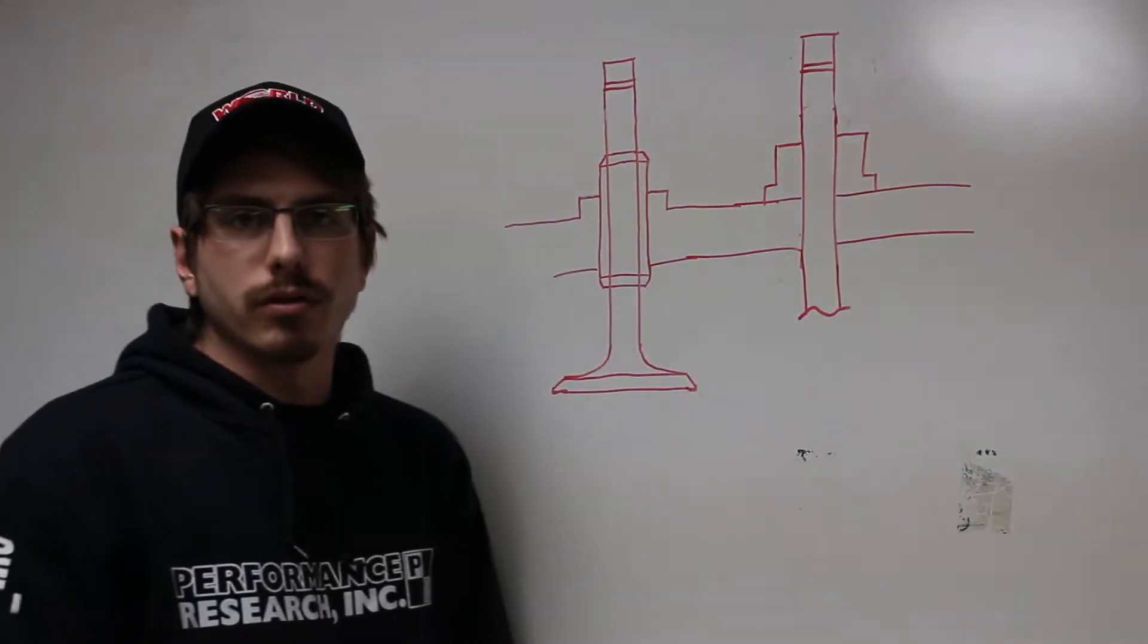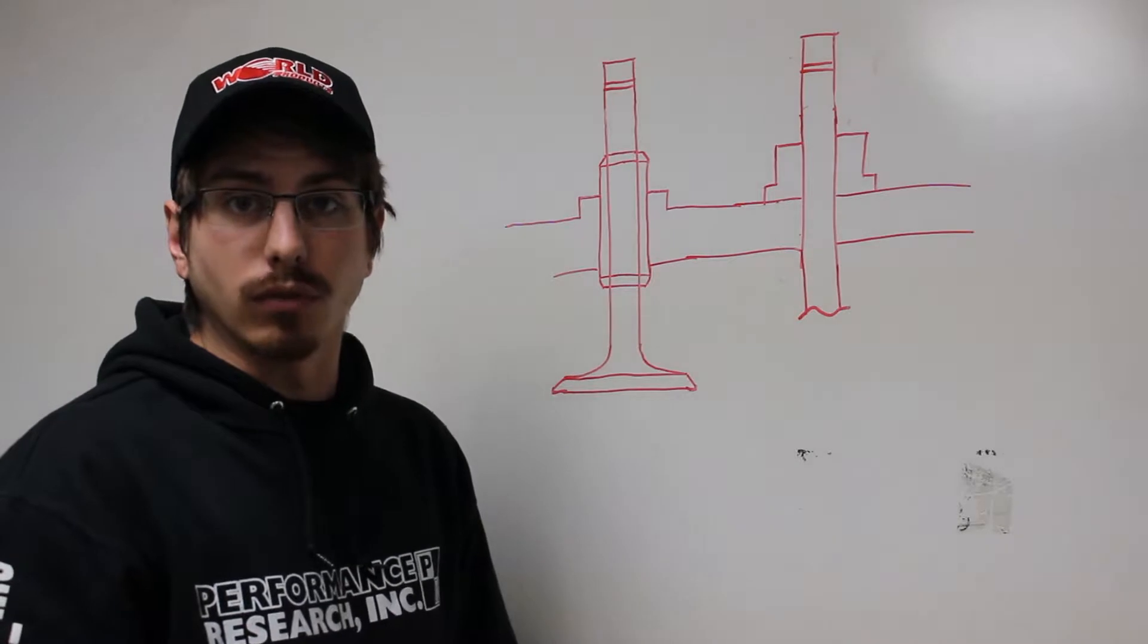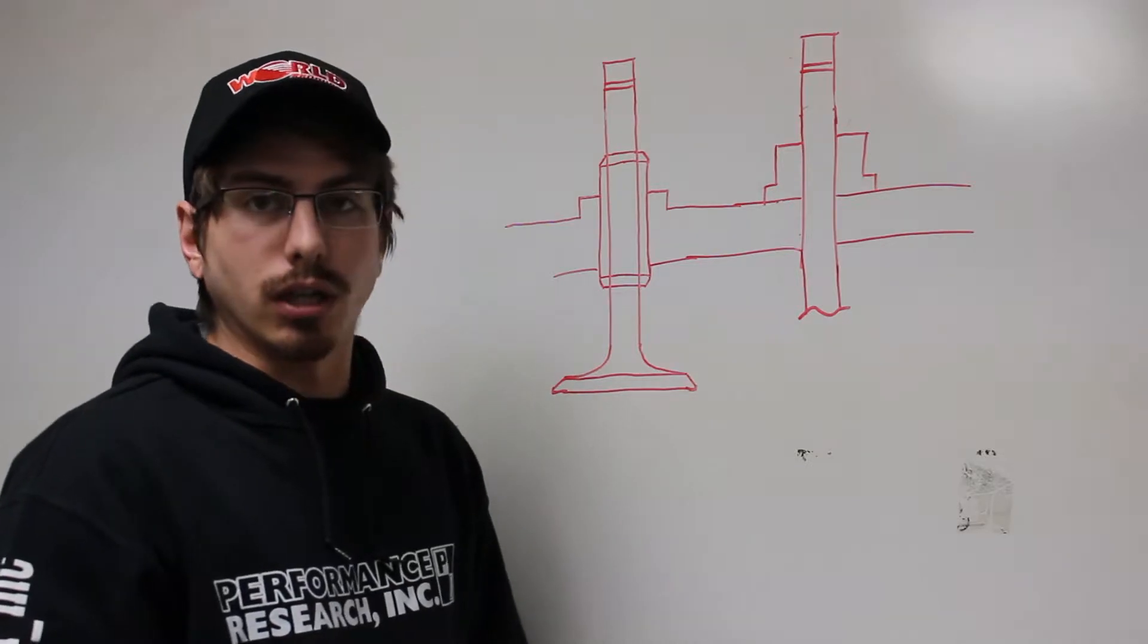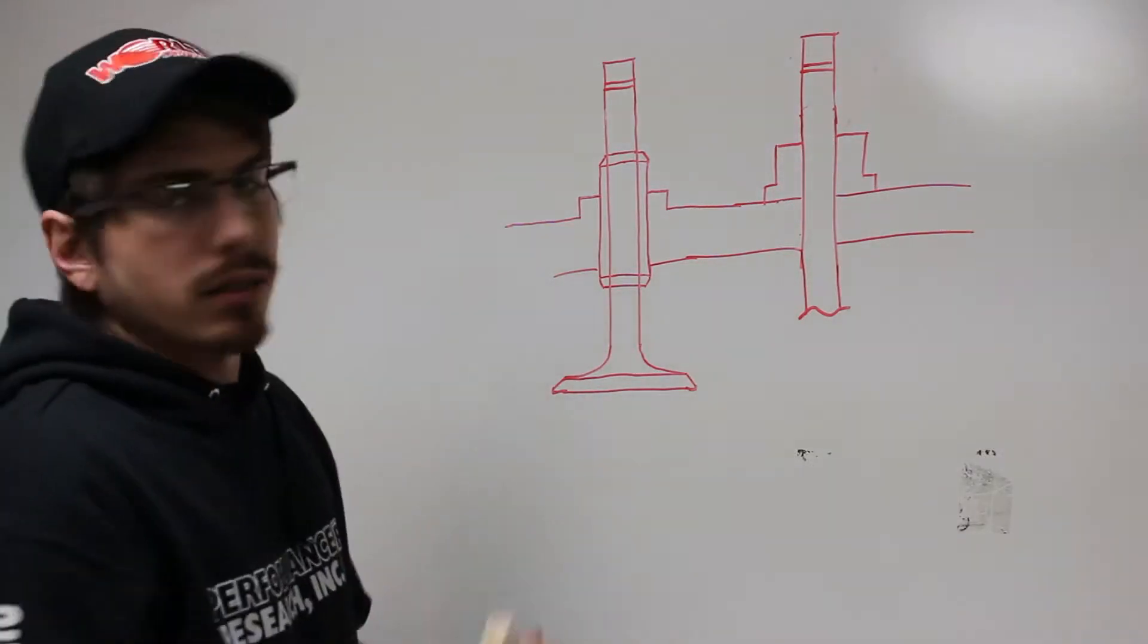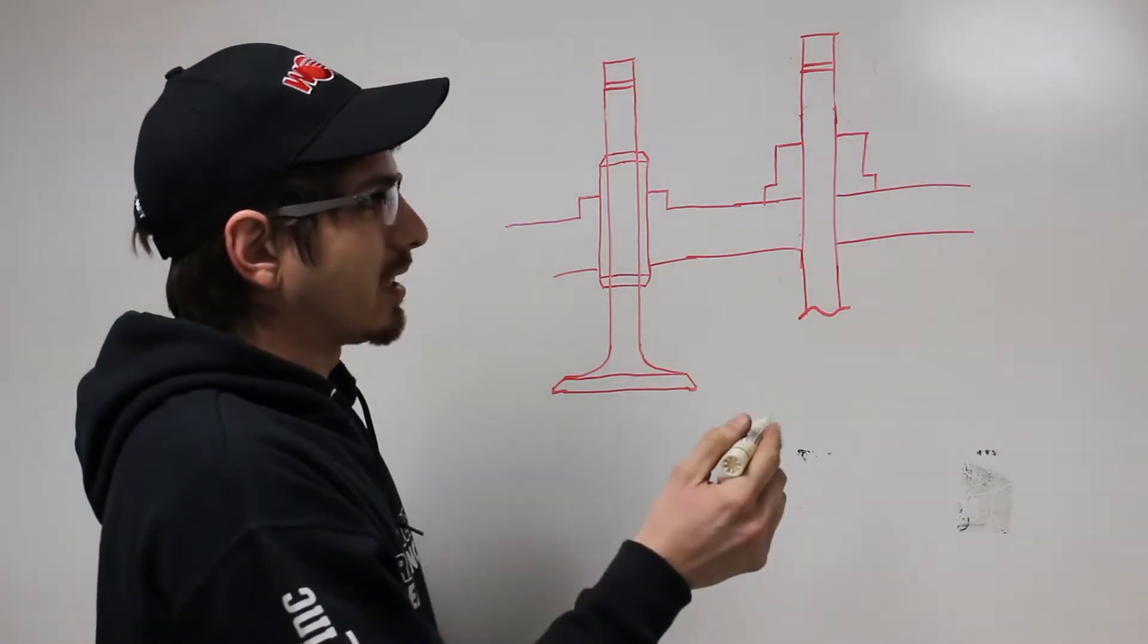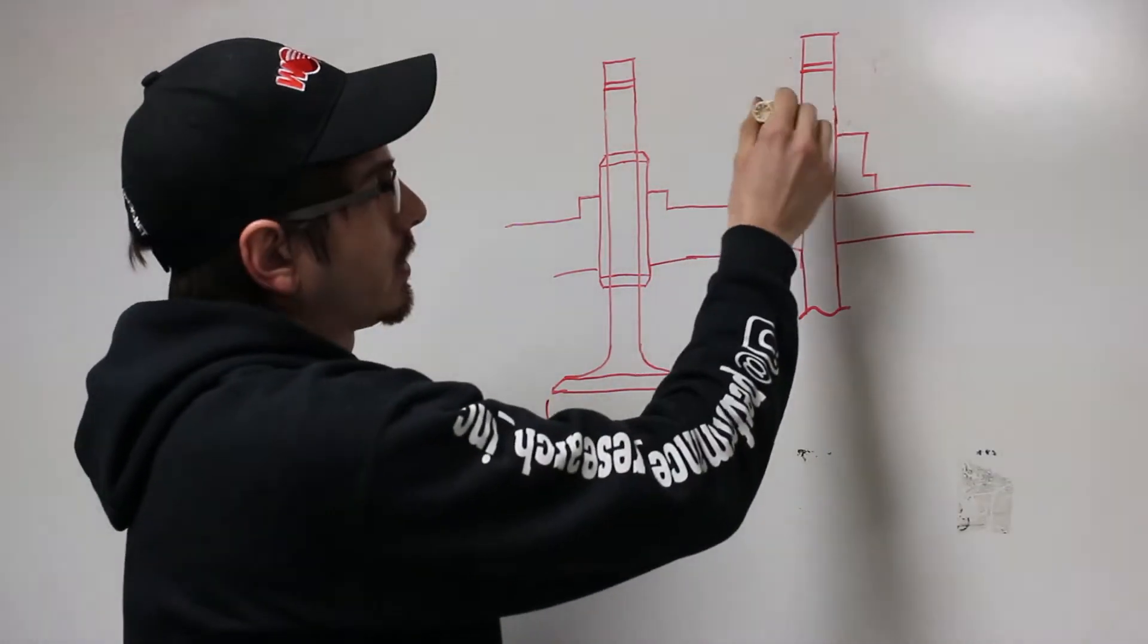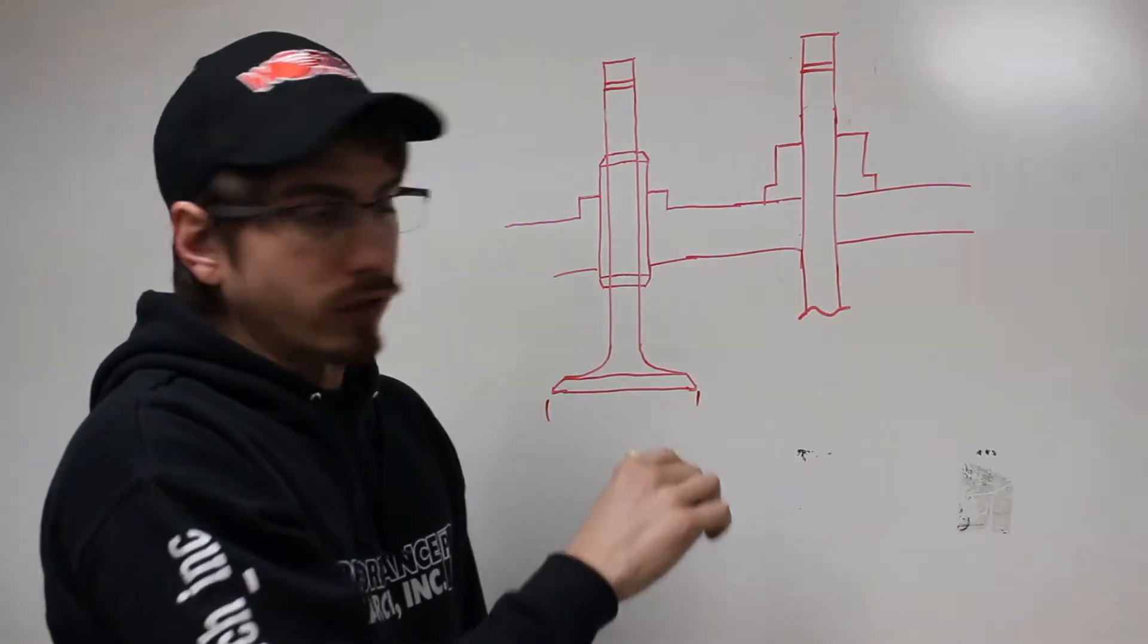Alright, today we are talking valve guides, more specifically valve guides in a set of old iron Pontiac 455 cylinder heads that we're doing for a huge project for our buddy Austin over at Luco Automotive. In 1970, popular size valves, and when I say size, I don't mean the size down here of the actual tulip. I'm talking about the stem.